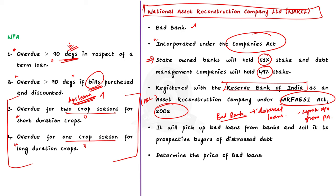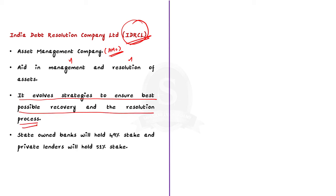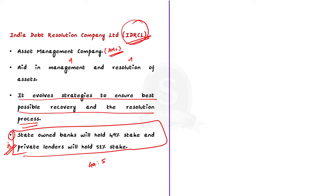As a bad bank, NARCL will pick up bad loans from commercial banks and sell them to prospective buyers of distressed assets. The NARCL will also be responsible for valuing the bad loans to determine at what price they should be sold. To resolve the NPA crisis, the government along with NARCL has also set up Indian Debt Resolution Company Limited or IDRCL. IDRCL is an asset management company that will provide management and resolution support to the NARCL, evolving strategies to ensure the best possible recovery. The public sector banks will hold a maximum of 49% stake in IDRCL, and the remaining 51% will be with private sector lenders.